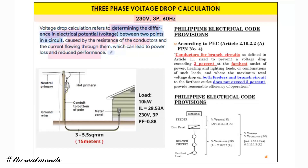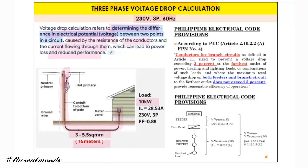So as shown in the figure, we have our utility and our load. We have assumed a 10 kilowatts load, and the length from the transformer — a step-down transformer — is 15 meters. The conductor used is 3 x 5.5 square mm. We have PEC provisions Article 2.10.2.8.